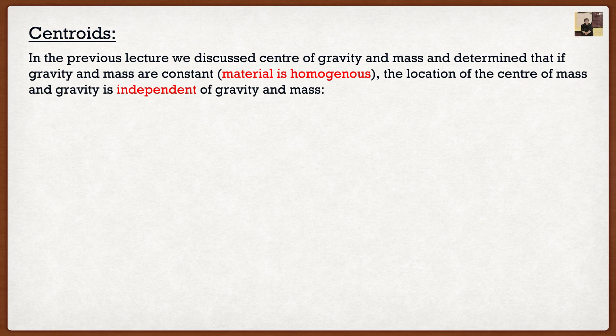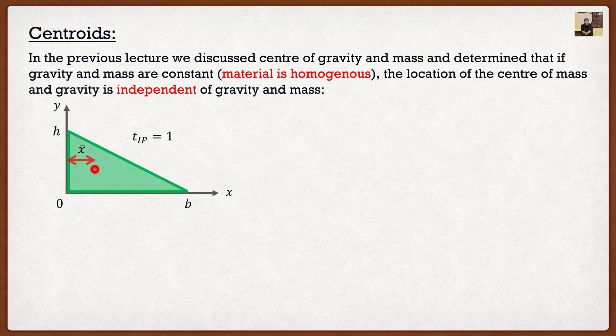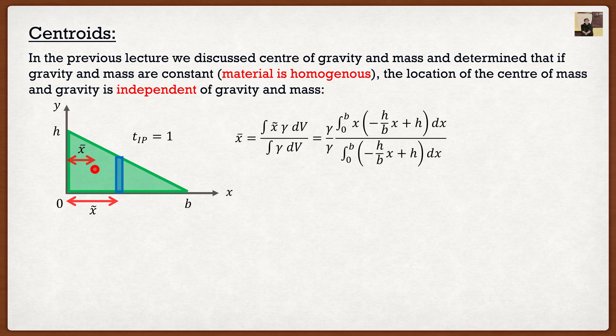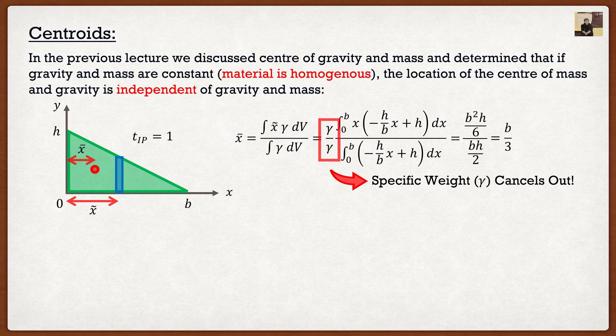We kind of stumbled upon this, but in the last lecture when we found the center of gravity of a triangle and analyzed a vertical slice, we found that since our specific weight was constant we could factor it out, and since it appeared on the top and bottom it completely cancelled out. So we were able to find the x-component simply by looking at the geometry of the triangle — we did not need to know the specific weight or density. We can find these coordinate points for a homogeneous material based on geometry alone.